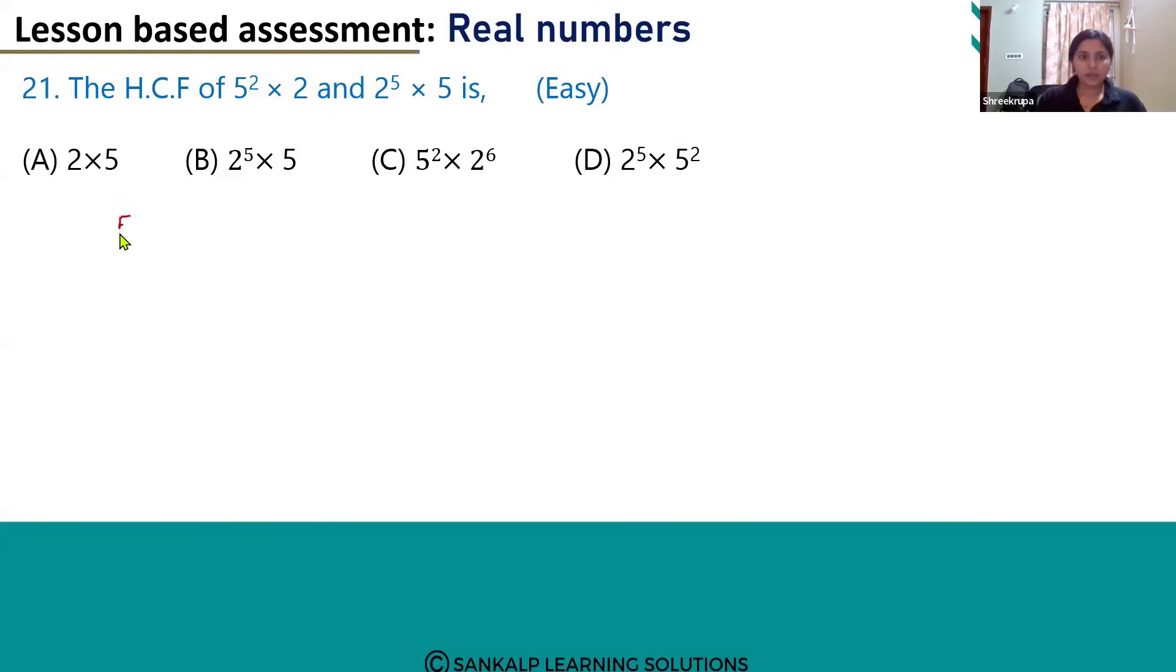Let's call these numbers a and b. The prime factorization of a is 5² × 2, and the prime factorization of b is 2⁵ × 5.